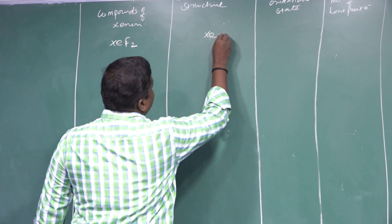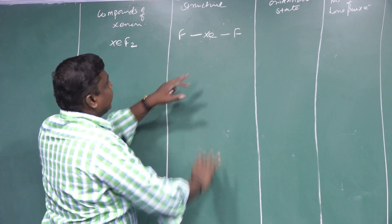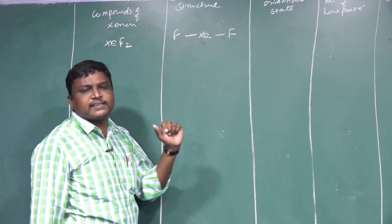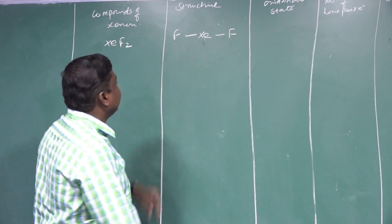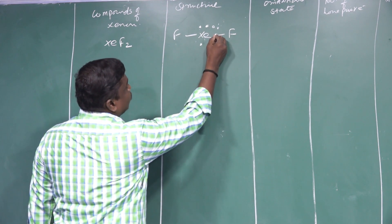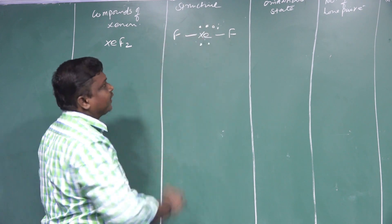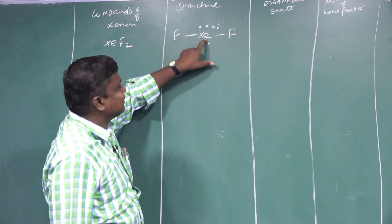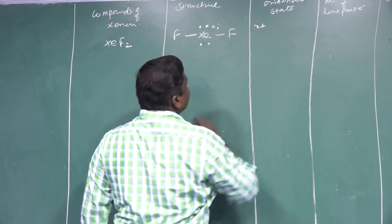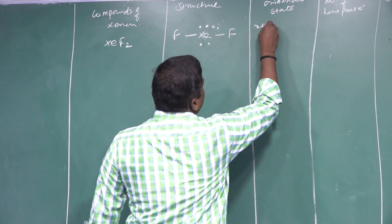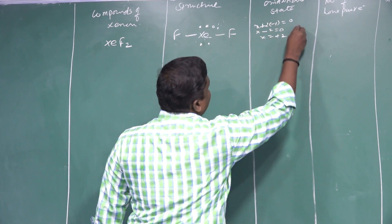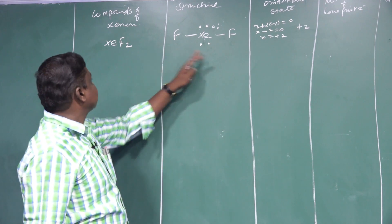For XeF2 (xenon difluoride): xenon is in Group 18, with outermost electronic configuration ns2 np6. It has 8 electrons total, satisfying the octet. To calculate oxidation state: x + 2×(−1) = 0, so x − 2 = 0, giving x = +2 oxidation state.